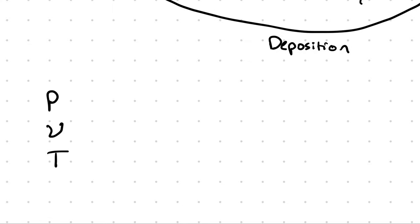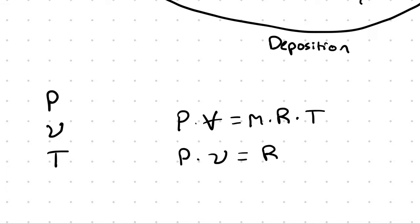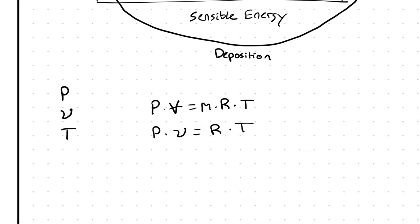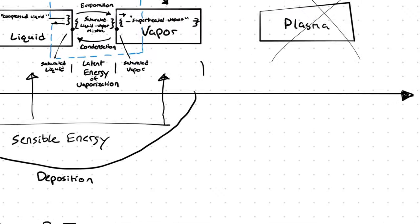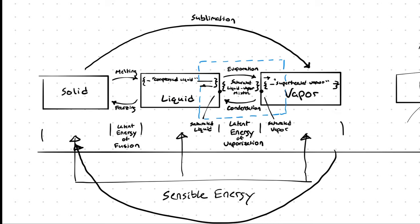Those three properties were related to one another in a very reliable way when we were talking about the ideal gas law: pressure times volume equals mass times specific gas constant times temperature, i.e., pressure times specific volume equals specific gas constant times temperature. That was the relationship between pressure, specific volume, and temperature — related on a linear basis with a constant we called the specific gas constant. But for real substances, the relationship between them is not quite so cut and dry. Instead, we have to look at them one by one and keep track of the changes on a very general basis.